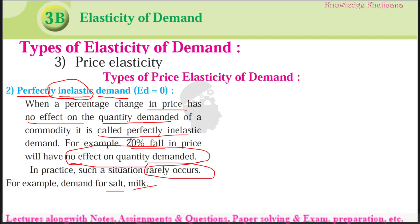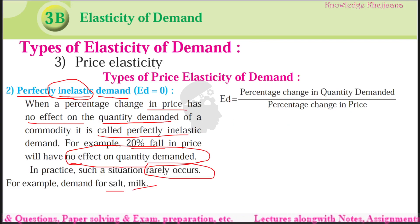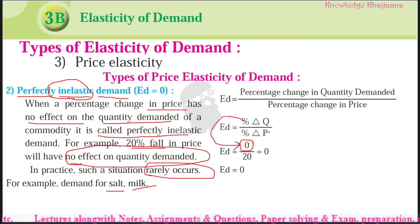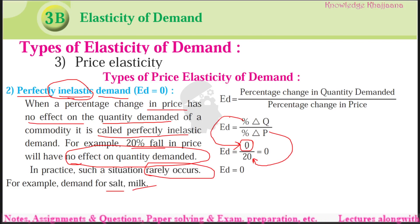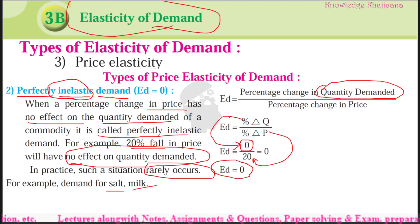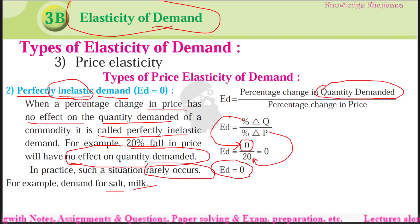This situation really occurs in practice. For example, demand for salt and demand for milk — even if the price rises or falls, the demand remains the same. The formula for elasticity of demand is percentage change in quantity demanded divided by percentage change in price. What is the percentage change in quantity demanded? It is zero. Demand remains same even though the price increases. As the numerator is zero, perfectly inelastic demand is zero.